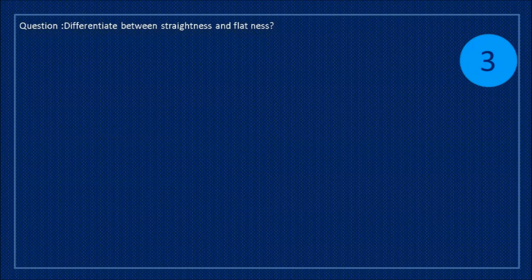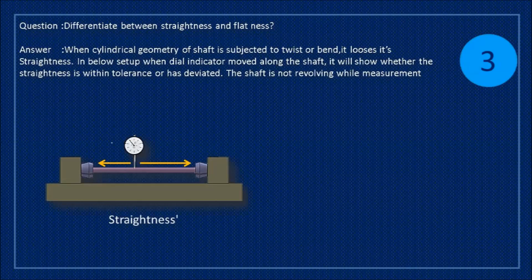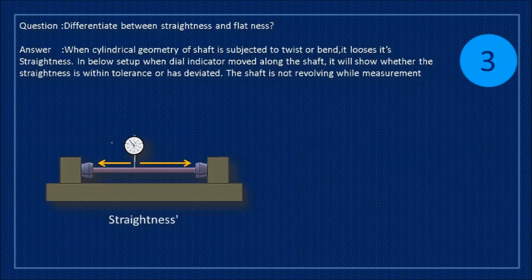Question: differentiate between straightness and flatness? Answer: when cylindrical geometry of shaft is subjected to twist or bend, it loses its straightness. In below setup when dial indicator moved along the shaft, it will show whether the straightness is within tolerance or has deviated. The shaft is not revolving while measurement.